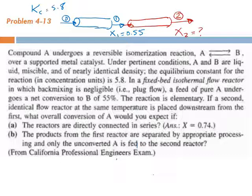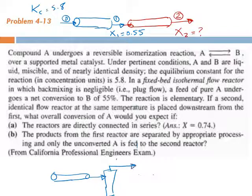What's the other option B? The products from the first reactor are separated by appropriate processing and only the unconverted A is fed to the second reactor. So let's see this option. So we have the first reactor, and then we have a second reactor, but before the second reactor we have a separator. So there's separation here, and after separation takes place we have the second reactor here.